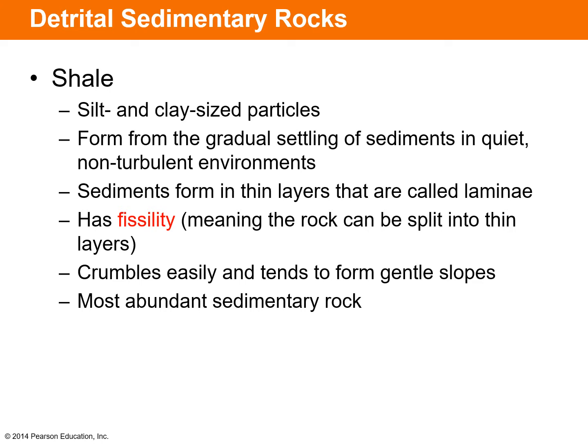In shale, the silt and clay-sized particles form into thin layers called laminae. Shale has what's known as fissility, meaning the rock can be split into thin layers along those laminae. It typically crumbles easily and tends to form gentle slopes in the natural world, and it is the most abundant type of sedimentary rock.